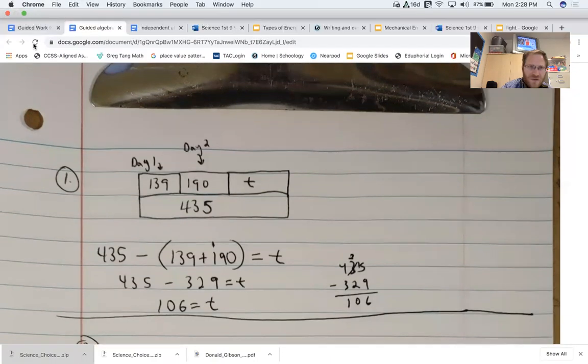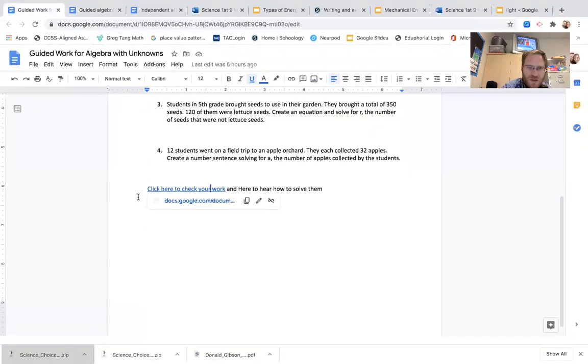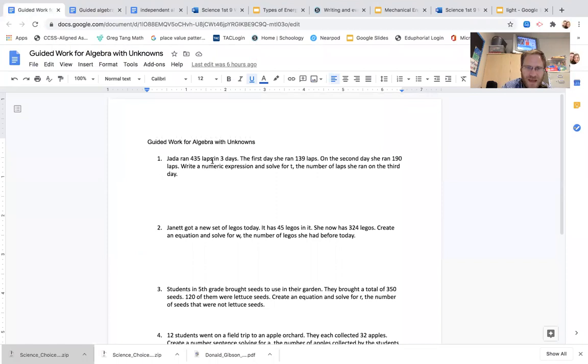All right, so again, that was the first one that talked about how many laps. That was the total amount, and the first day was 139, and the second day was 190, and so we had to figure out what was left.